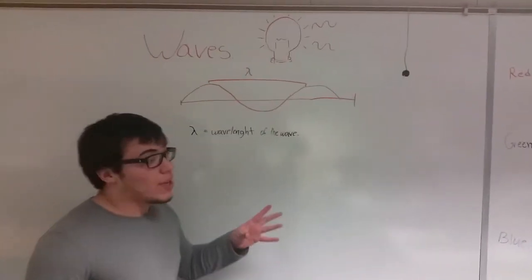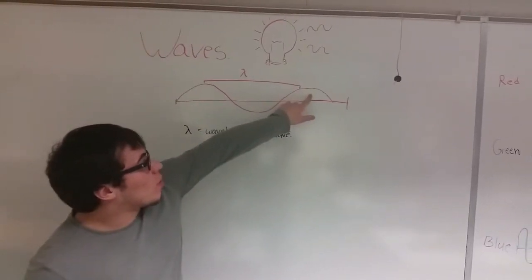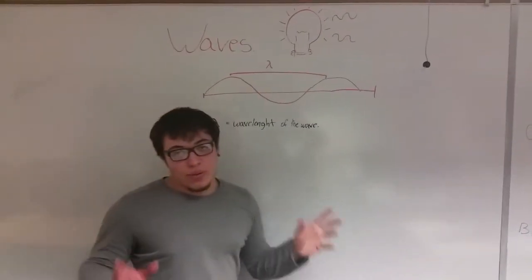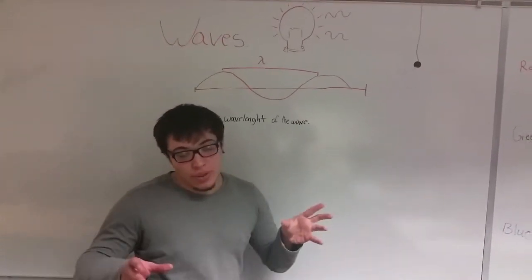Light is also waves. And waves are determined by the distance between these two peaks right up here, which is also known as lambda, and these are also frequencies. And depending on the frequency will change the color of the light.